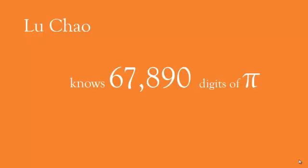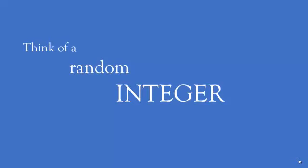That's fine if, like Liu Chao, we know enough digits of pi, but I don't know many. So I need another method. Fortunately, all I need to do is think of a random integer, because the probability that any integer I choose at random will contain the encoded answers to the exam questions is 1.